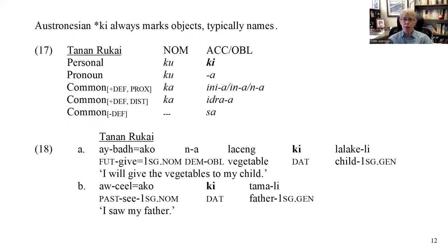As we can see in example 16B, a Romance language marks a human MP with a dative case marker or allative preposition. There is also evidence from Tanan Rukai that there is a dative case marker in this language. In ditransitive clauses like 18A, the marker ki appears with the goal MP — 'I will give the vegetables to my child.' Ki also appears on direct objects when they are human MPs, as in 'my father' in 18B.